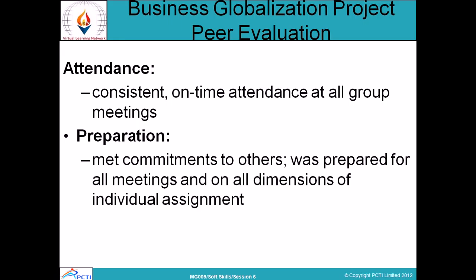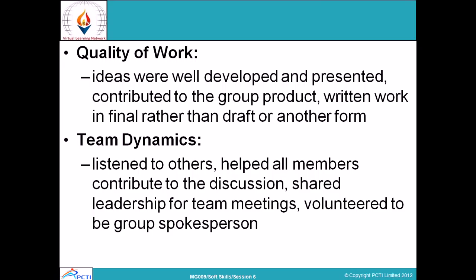The business globalization project requires peer evaluation. First is attendance — team members must come to all group meetings consistently. Second is preparation — having made commitments to others, being prepared for all meetings and all dimensions of individual assignment. Third is quality of work — always providing good quality work. The team leader can motivate to give quality work and achieve the targets. Ideas should be well developed and presented, and written work should be in final form rather than draft. Finally, team dynamics — listen to others in conflict resolution.